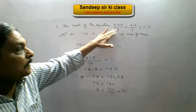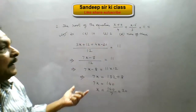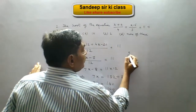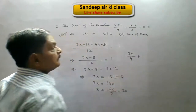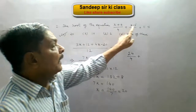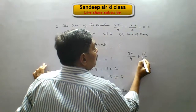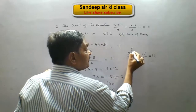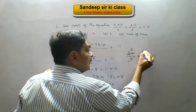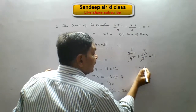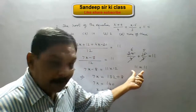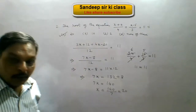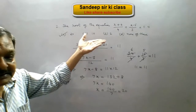We put these values in the given equation, and whichever value satisfies it will be the root of the equation. When we put 20: (20 plus 4) upon 4 is 24 upon 4, and (20 minus 5) upon 3 is 15 upon 3. Since 24 divided by 4 is 6 and 15 divided by 3 is 5, we get 6 plus 5 equals 11. Left hand side equals right hand side, confirming 20 is the root because the root is the value of x which satisfies the given equation.